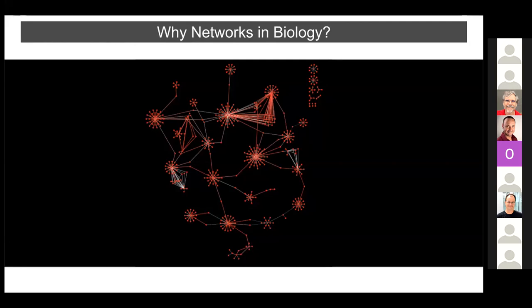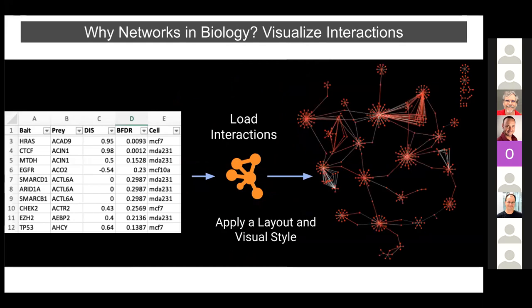Networks are a data structure used to make models of the world as interactions between things — for example, synthetic lethal reactions between genes, protein binding, drug-target binding, or cell-cell signaling relationships. We can model causal relationships: AKT phosphorylates GSK3-beta which inhibits its activity; BRAF mutation leads to melanoma. Networks can be used to visualize interaction data and help you discover structures in those relationships, helping you form hypotheses about active biology in your experiment.